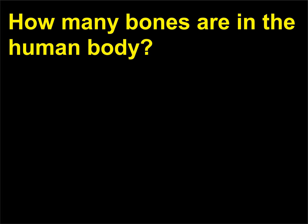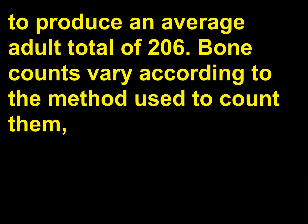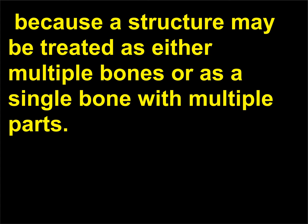How many bones are in the human body? Babies are born with about 300 to 350 bones, but many of these fuse together between birth and maturity to produce an average adult total of 206. Bone counts vary according to the method used to count them, because a structure may be treated as either multiple bones or as a single bone with multiple parts.